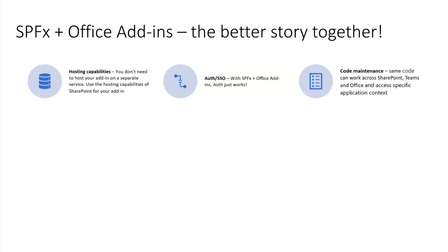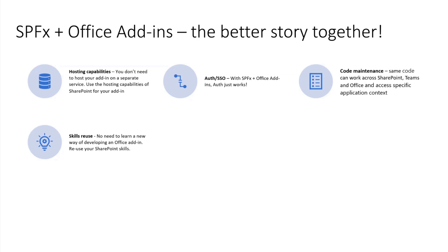Code maintenance is also a great benefit. The same code can work across SharePoint, Microsoft Teams, and Office — exactly the same code, with no changes required unless you want to access something service-specific, like the Office JavaScript SDK. The baseline component and implementation is exactly the same, so you can reuse the same piece of code. Skills reuse is equally important — you don't have to learn anything specific. It's the same toolset, the same Yeoman generator, the same APIs, the same TypeScript version, and the same extensibility model.